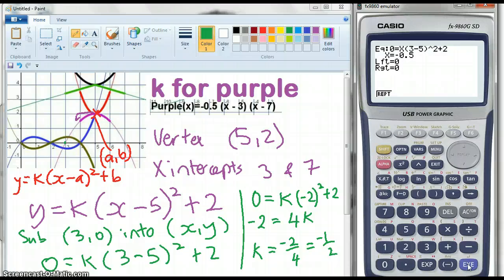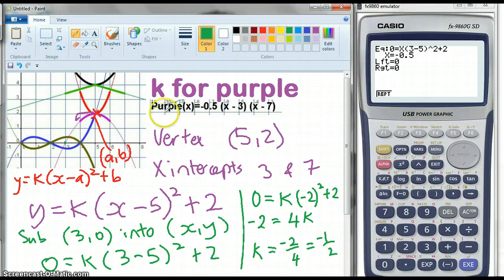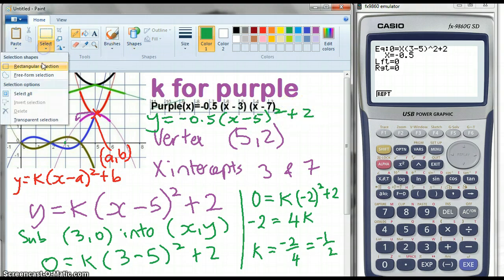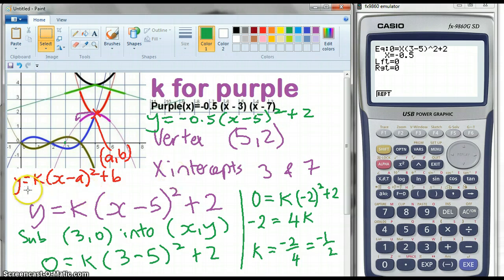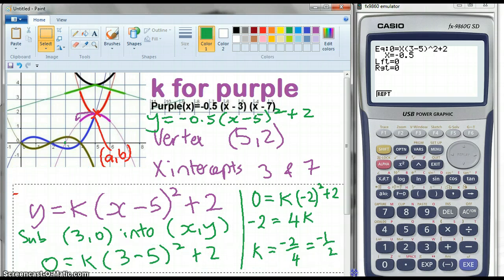Bingo. Now we're going to do the whole thing again, but we're going to use the intercept method. So let's just remember that we had that equation of y equals negative 0.5(x minus 5) squared plus 2. Alright, so that's what we worked out. Once you've worked out k, you'd better write the equation. I'm going to get rid of all of that.